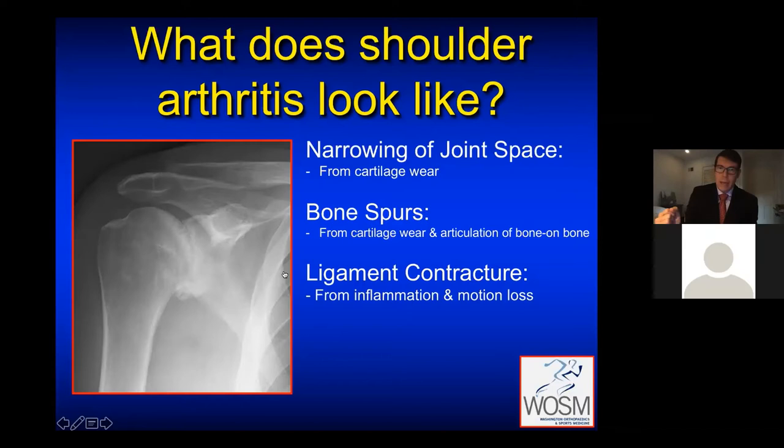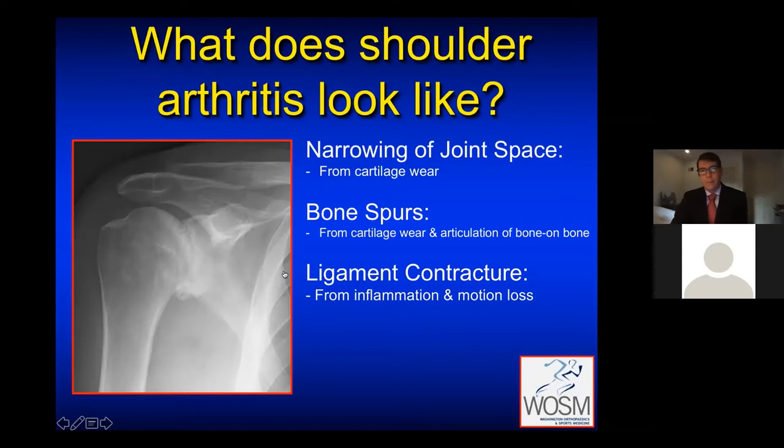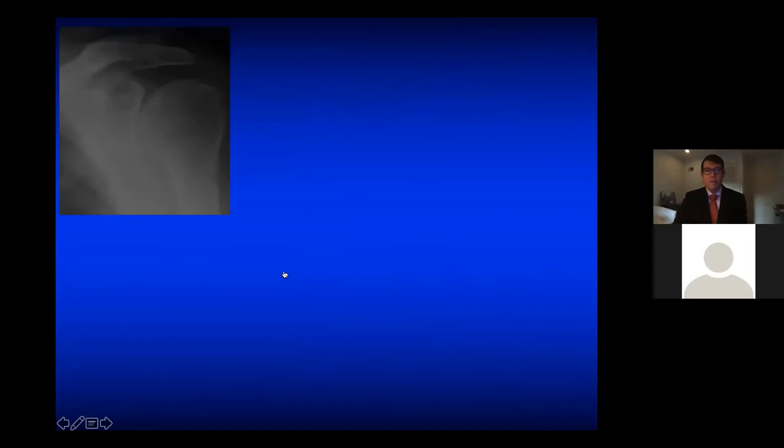Typically, that motion loss tends to be a loss of external rotation — rotating out to the side — a loss of forward elevation, lifting up and coming out to the side and coming in the back. These are things that we work hard and pay a great deal of attention to for restoration when we do our replacements. And then you get progressive deformity, which is erosion of the socket.